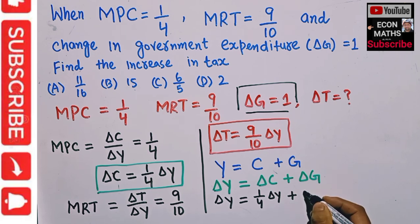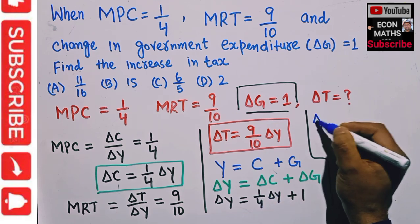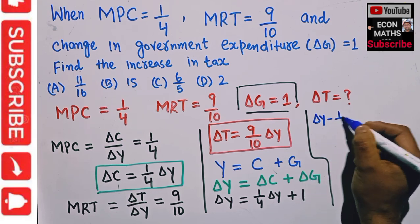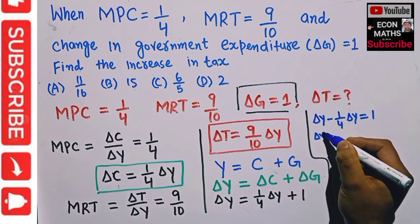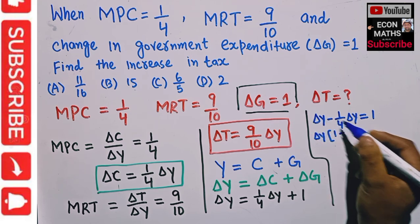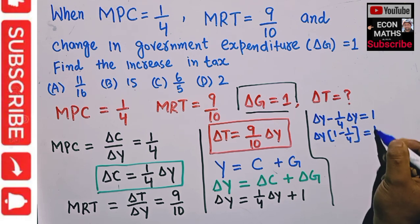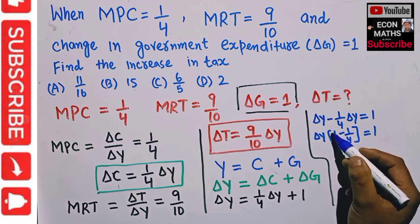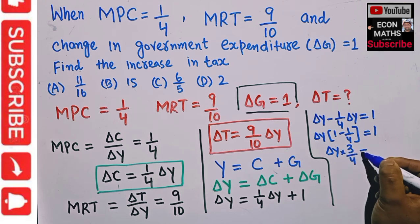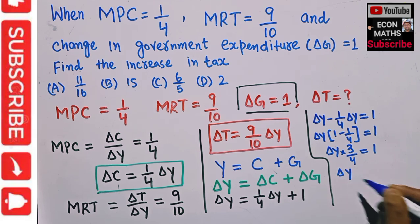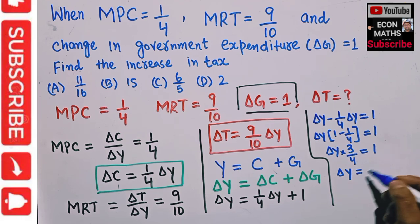Transposing the consumption term to the left-hand side: ΔY − (1/4)ΔY = 1. Taking ΔY common gives ΔY × (3/4) = 1, which gives us change in income ΔY = 4/3.